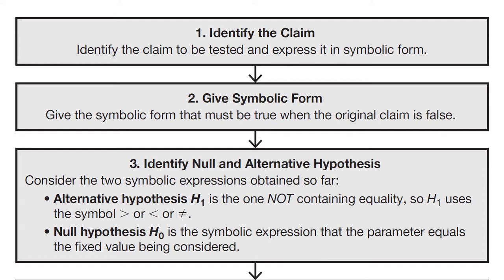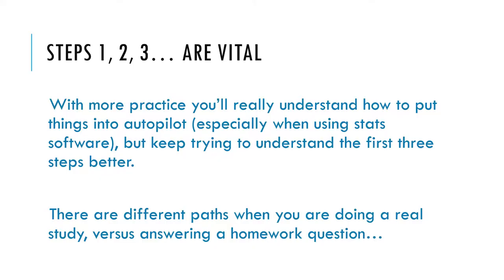In class we've worked a lot on the first three steps, which are the most vital: identifying the claim and writing it in symbolic form using the correct parameter, writing the symbolic logical inverse, then identifying which statement is the null and which is the alternative. With more practice you'll start putting things on autopilot. There are different paths you can take if you're doing a real study versus answering a homework question.